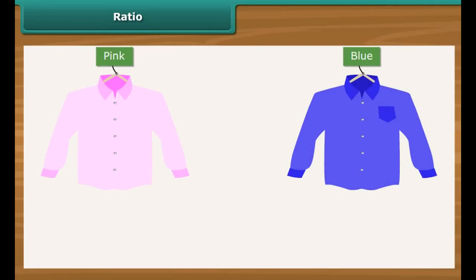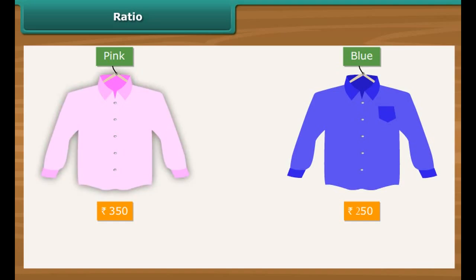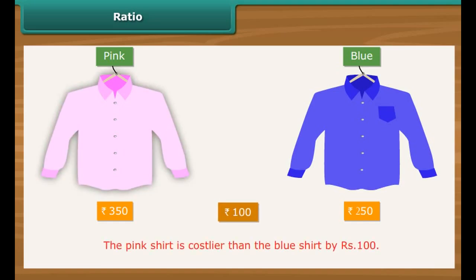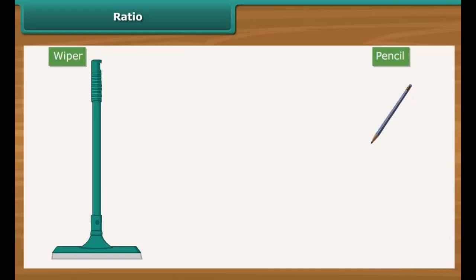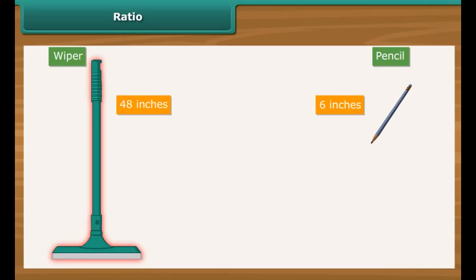Similarly, suppose Ritu buys two shirts, one pink and the other blue, costing rupees 350 and rupees 250 respectively. We say that the pink shirt is costlier than the blue one by rupees 100. However, comparison by difference does not make sense when we compare quantities and values that are wide apart. For example, suppose we compare a 6 inch long pencil with a 48 inches long wiper.